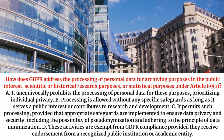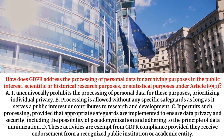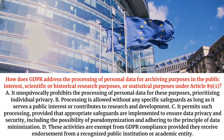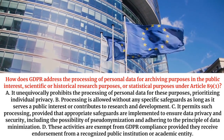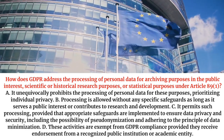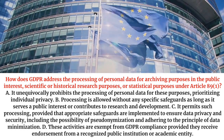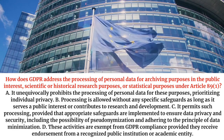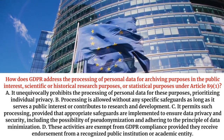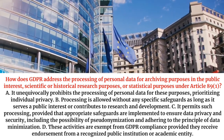How does GDPR address the processing of personal data for archiving purposes in the public interest, scientific or historical research purposes, or statistical purposes under Article 89-1? A. It unequivocally prohibits the processing of personal data for these purposes, prioritising individual privacy. B. Processing is allowed without any specific safeguards as long as it serves a public interest or contributes to research and development.